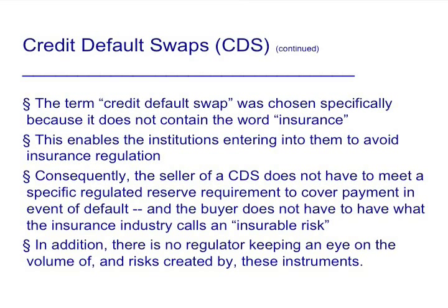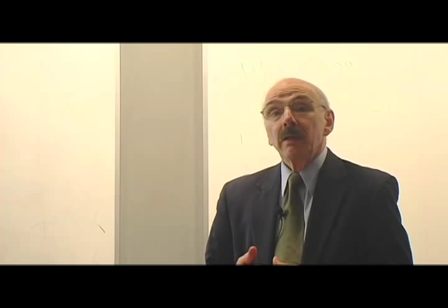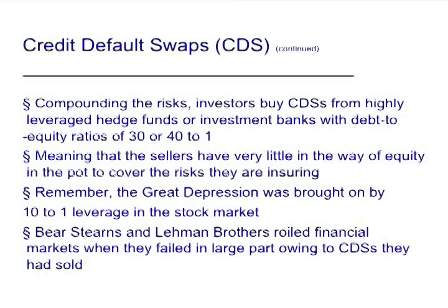The seller of a credit default swap does not have to meet specific regulated reserve requirements to cover payment in the event of the default being insured. The buyer does not have to have what the insurance industry calls an insurable risk. In addition, there is no regulator keeping an eye on the volume of and risk created by these instruments. Compounding the risk, investors buy credit default swaps from highly leveraged hedge funds or investment banks with enormous leverage ratios of 30 or 40 to 1 — meaning 30 units of debt for every unit of equity, leaving sellers very little equity to cover the risks they are insuring. Remember, the Great Depression was caused by margin in the stock market at 10 to 1 leverage, and we're three, four, five times higher than that with credit default swaps.